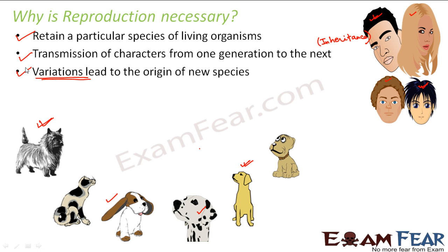These are the three most important reasons why reproduction is a very important process for all living organisms. First, for the survival of living organisms on earth. Second, for the transmission of characters so that they keep going from one generation to the next. Third, because whenever reproduction happens there will be some variations, and these variations in turn will give rise to new species in the long run.